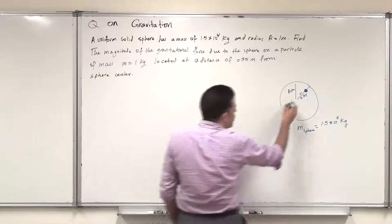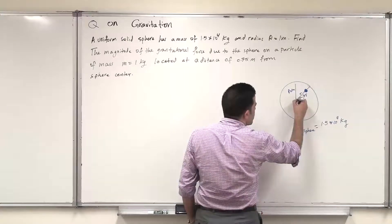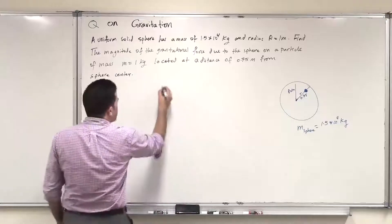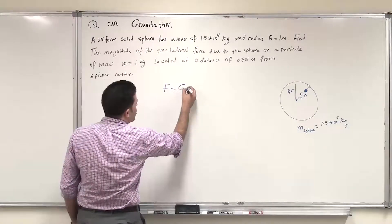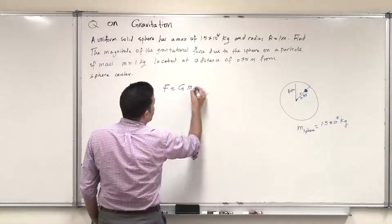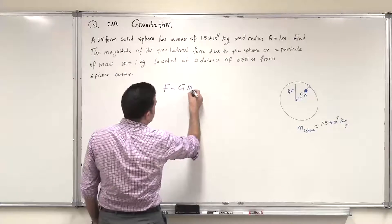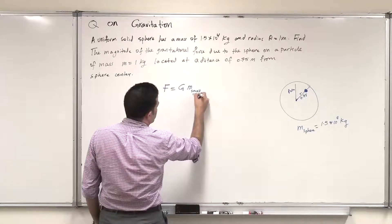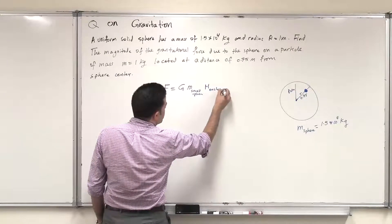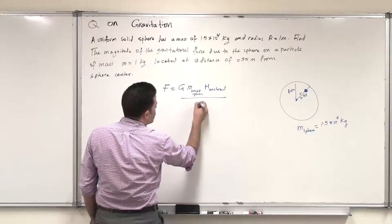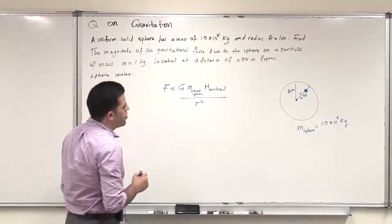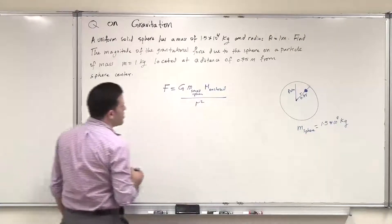Now we want to find the force from the sphere on this small mass. So the gravitational force is given as F = G m (mass enclosed) / r^2, the distance from the center of the sphere to the other mass inside the sphere.